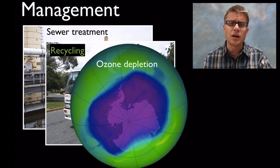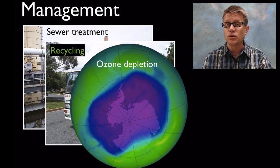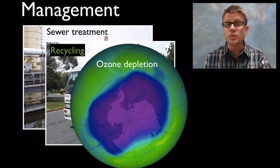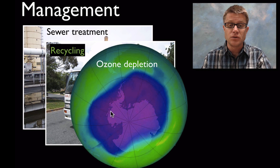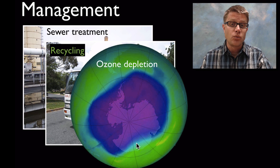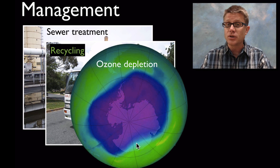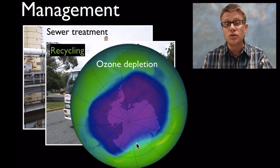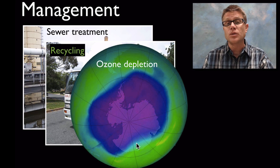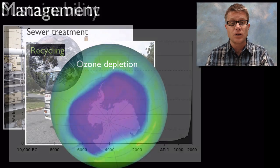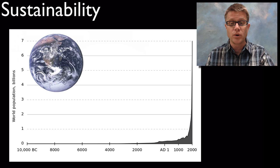A great example of this is ozone depletion. When I was young it was a really big deal — we had been using chlorofluorocarbons (CFCs) and they were reducing this protective ozone layer. As a country, and along with other countries, we started to reduce the use of CFCs, and the ozone is starting to rebuild. It's not going to be the threat that it was at one point.